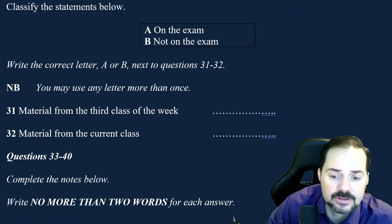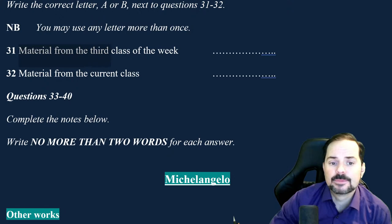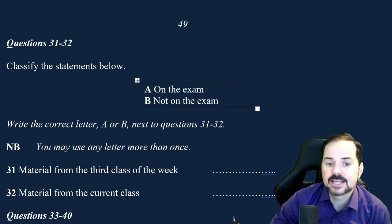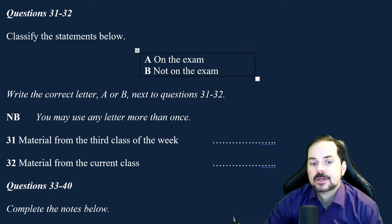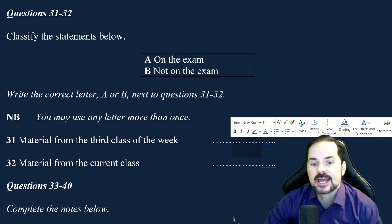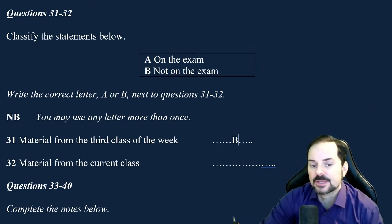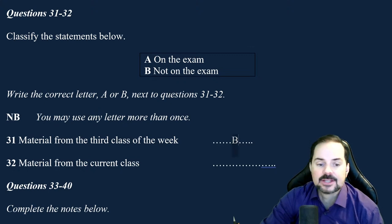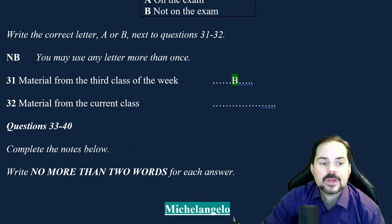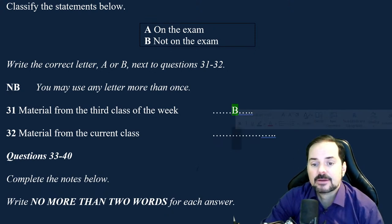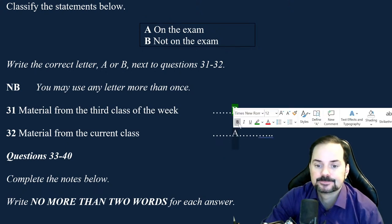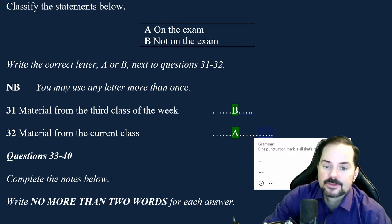The first one was a fairly easy kind of lead-in. Question 31: materials from the third week of class — are they on the exam or not? She says the last couple of classes this week won't be on the exam — so the answer is B. Question 32: material from the current class — she very clearly says this will be on the exam. So it's B and A for questions 31 and 32.